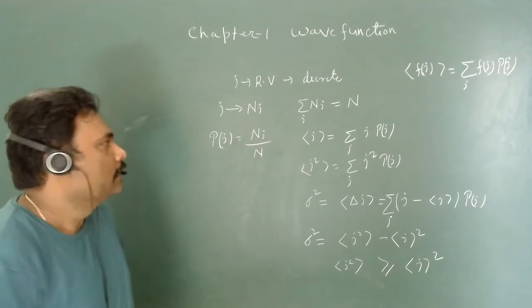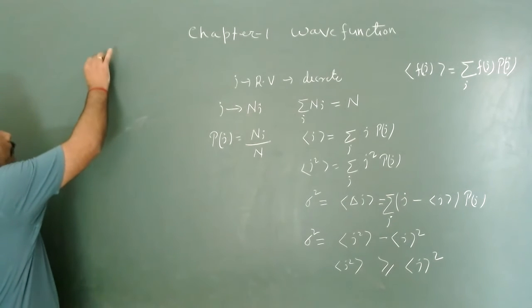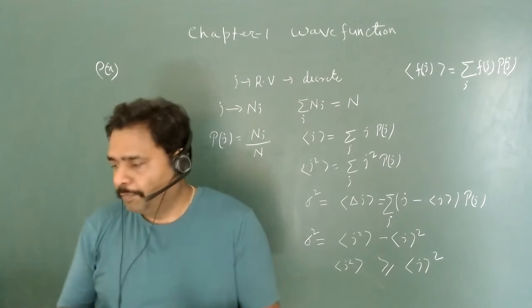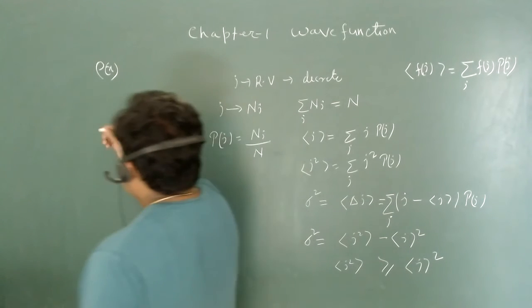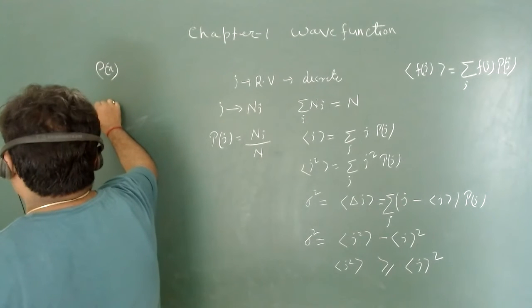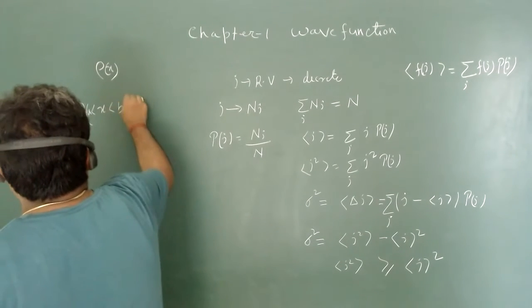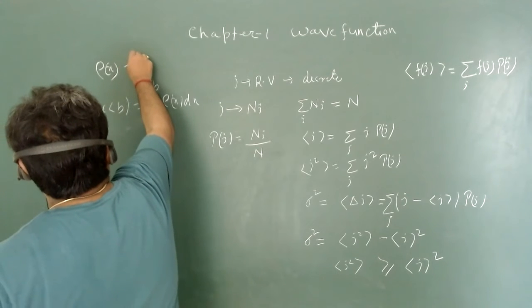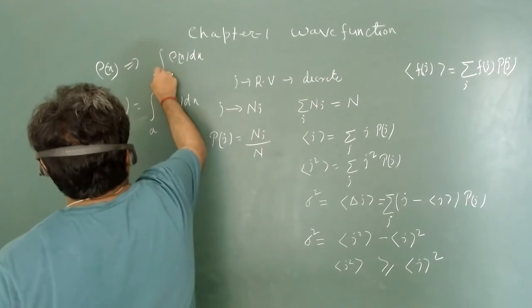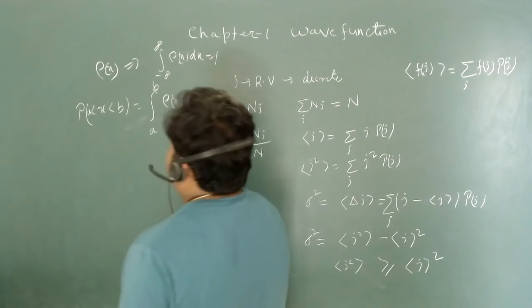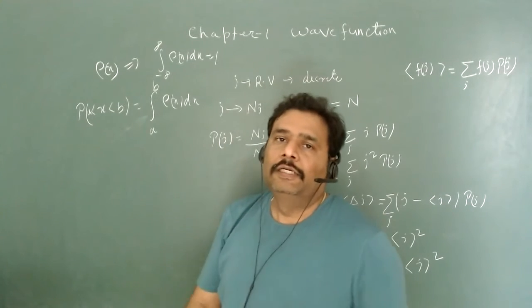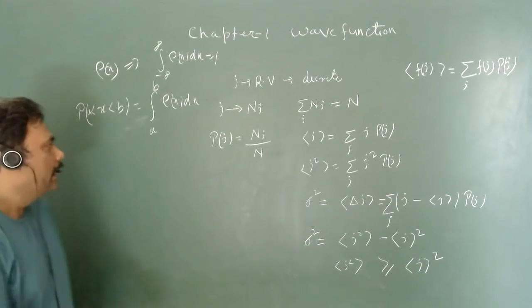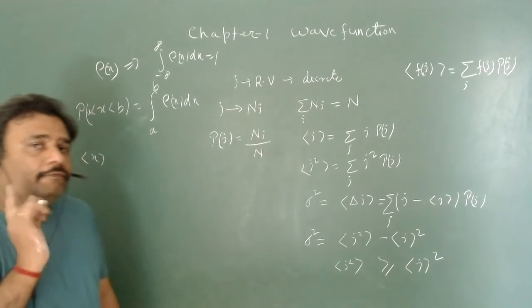Similarly, we have continuous variables. When talking about continuous variables, we have probability density ρ(x), which is probability per unit length in one dimension. The probability of X between A and B is the integral of ρ(x) dx from A to B. For ρ(x) to be a valid probability density, its integral over all X must equal 1.